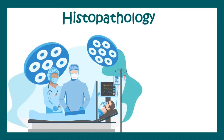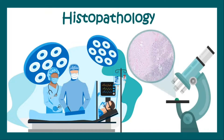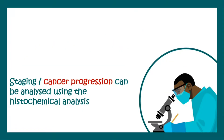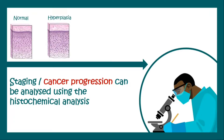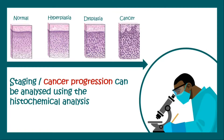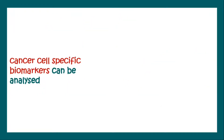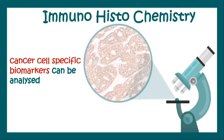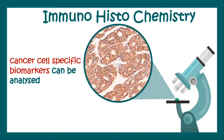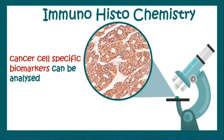Biopsy involves histopathological analysis, which can help us understand the staging or cancer progression. The biopsy can reveal whether the tissue is normal or whether it has undergone hyperplasia, dysplasia, or even neoplasia or cancer. Cancer cell-specific biomarkers can be analyzed using a technique known as immunohistochemistry, which can supplement the findings of a biopsy in determining the exact type of cancer. This summarizes the idea of biopsy.